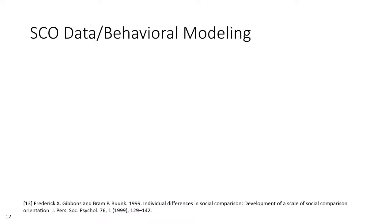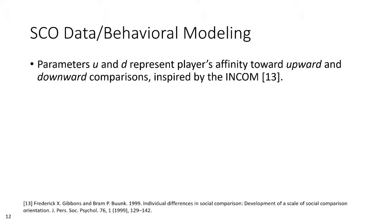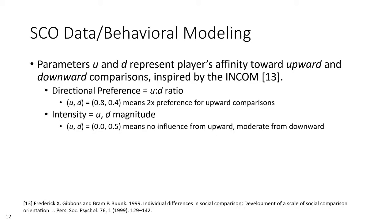Our second challenge, the SCO representation, consisted of a data model to portray the individual traits of the simulated player, and a behavior model that determined how the simulated player reacted to social comparison events. Our data model consisted of two parameters, U and D, which represented the simulated player's respective affinity toward upward and downward comparison on a linear scale. This reflects the design of an SCO instrument used in psychology research, the Iowa-Netherlands Comparison Orientation Measure, or INCOM. These two parameters then dictate SCO traits through derivative metrics. Directional preference is the proportion between U and D, and the intensity of reaction to a comparison event is modeled as the magnitude of the respective value.